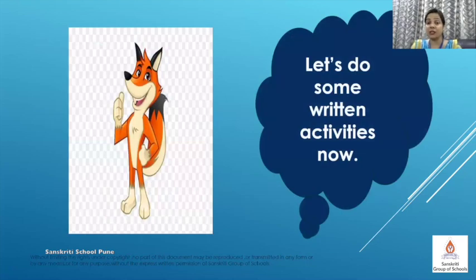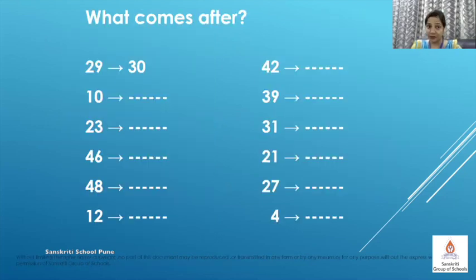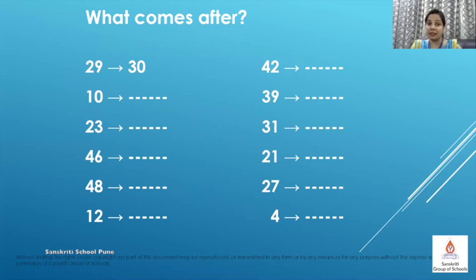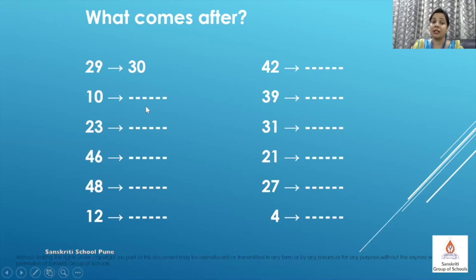Let's do some written activities now. What comes after? We have to tell the number that comes after the given number. We will take the first number 29 — the number that comes after 29 is 30. Similarly, the number that comes after 10 is 11. Very good — in the same way we will do all the sums.